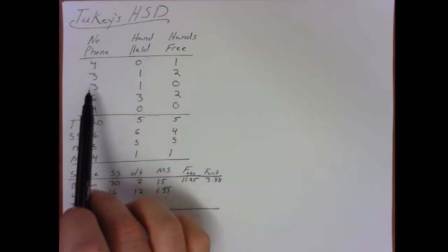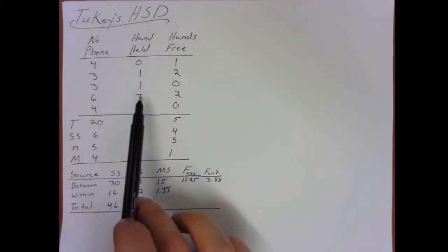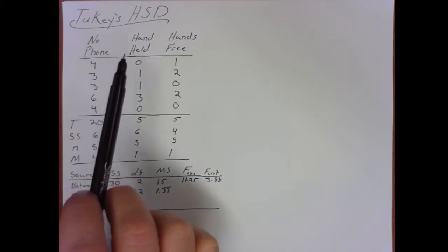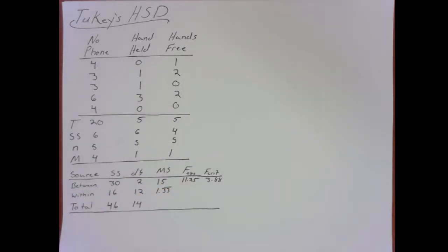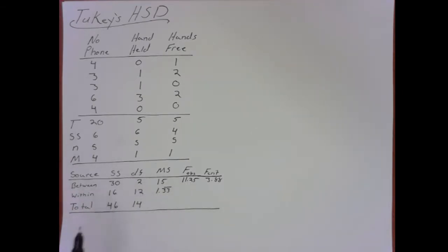We're working with a hypothetical experiment with three conditions. People are taking a driving test with no phone, a handheld phone, or a hands-free set. We got a significant result in our ANOVA telling us that at least one of the means was different from another one, but we don't know which pair of means is different — it could be one pair, two pairs, or all three means are different from each other.